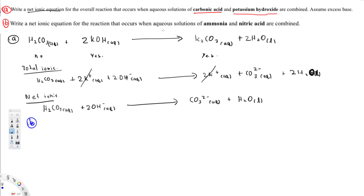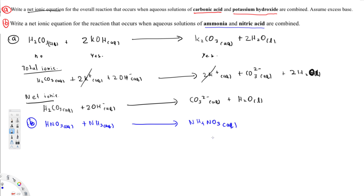Now let's do the second question: write a net ionic equation for the reaction that occurs when aqueous solutions of ammonia and nitric acid are combined. Nitric acid is HNO₃ aqueous and ammonia is NH₃ aqueous. When we combine these two we get NH₄NO₃ aqueous.